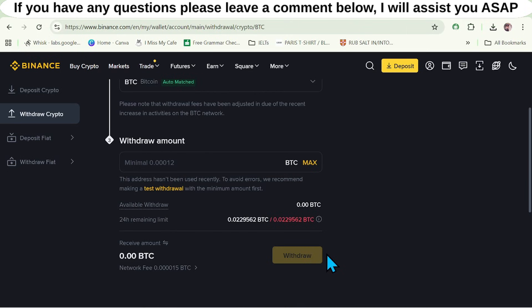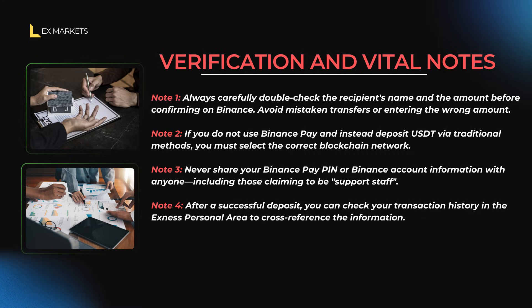The following are very important notes to ensure your deposit transaction goes smoothly. First, always carefully check the recipient's name and the amount before confirming on Binance to avoid sending to the wrong person or entering the wrong amount. Second, if you deposit USDT using the traditional method rather than Binance Pay, you must select the correct blockchain network such as TRC20 or BEP20 — choosing the wrong network means you will lose your money. Third, never share your Binance Pay PIN or Binance account information with anyone, including those claiming to be broker support staff. Finally, after a successful deposit, check the transaction history in your Exynos personal area to verify the information.